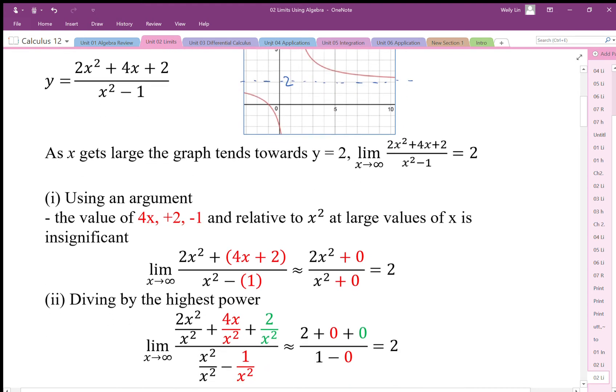We could use an argument to get there. If we look at x², our x² value as x gets really big, 4x, +2, and -1 become really insignificantly small relative to the x². For example, 1 billion squared is almost a billion times as big as 4x.